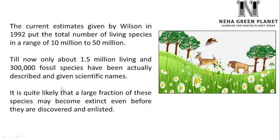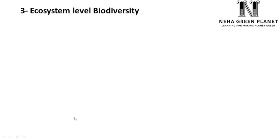At the rate by which we are causing harm to the environment, it is quite likely that a large fraction of these species may become extinct even before they are discovered or enlisted. The third level of biodiversity exists at the ecosystem level.